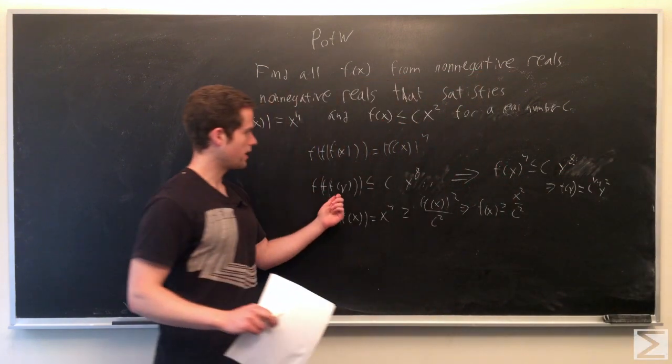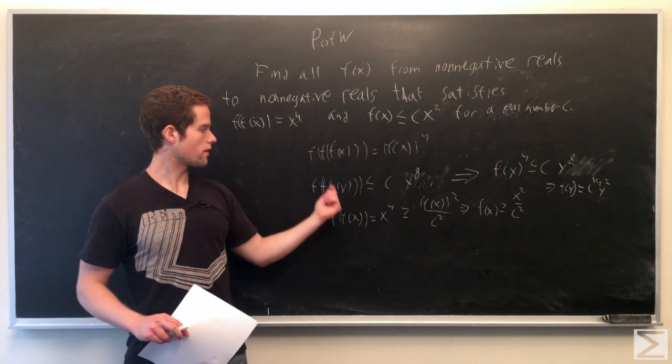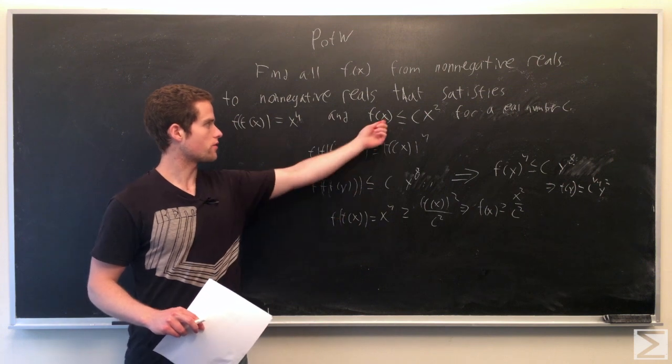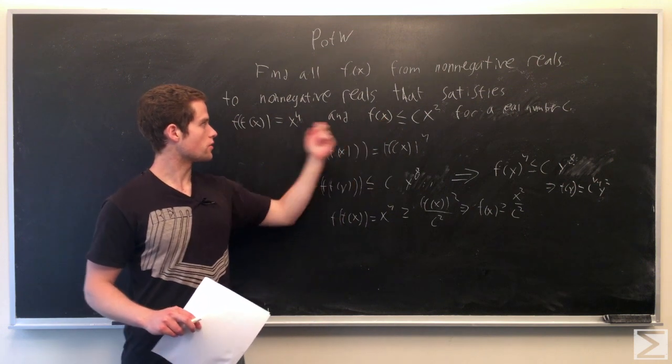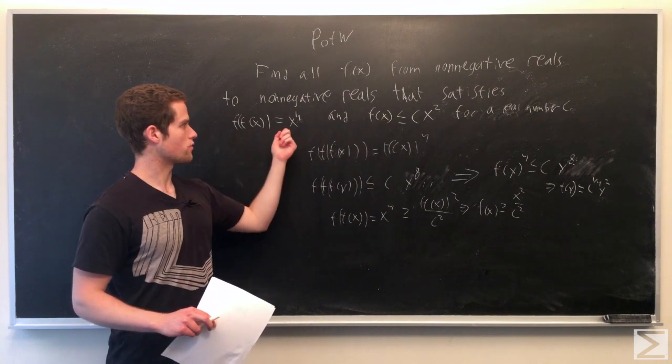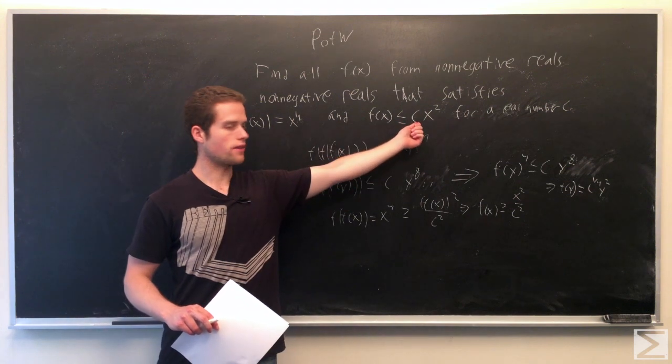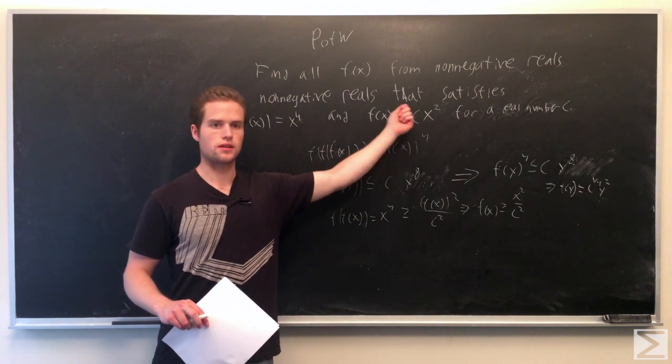So plugging in f of f of f of y for x here, we get, so f of f of y is just y to the 4th, so on the right side comes less than equal to c times y to the 8th.